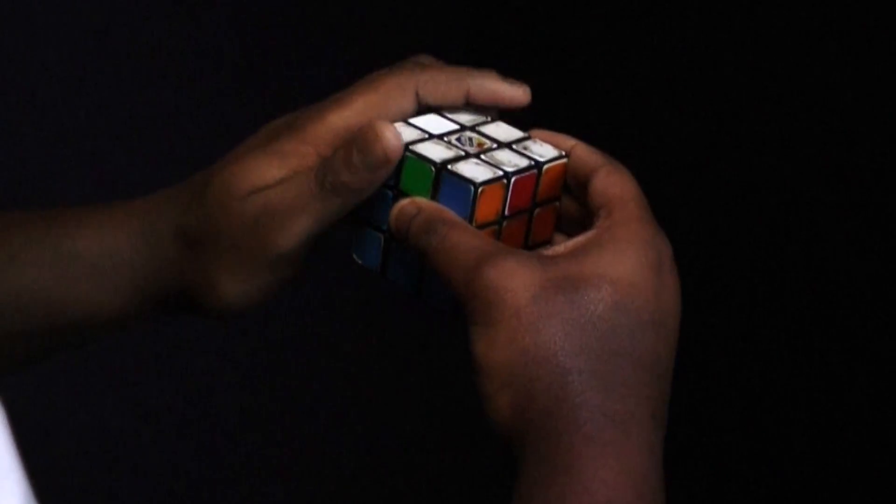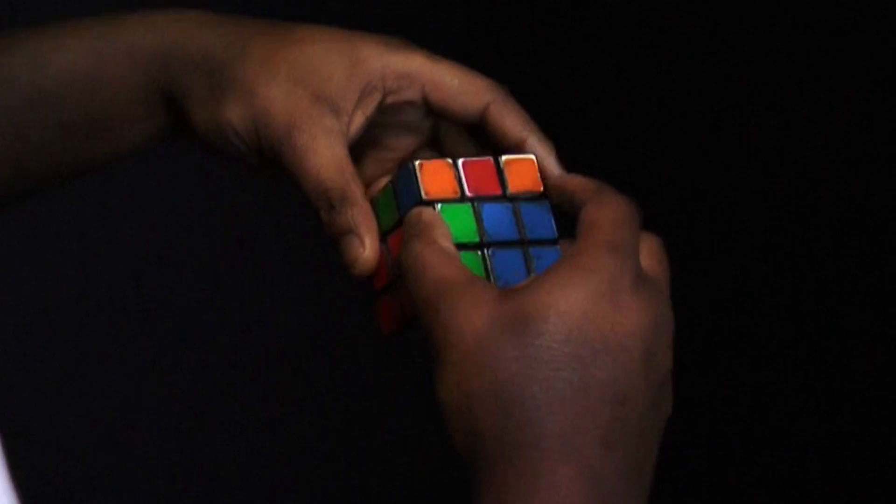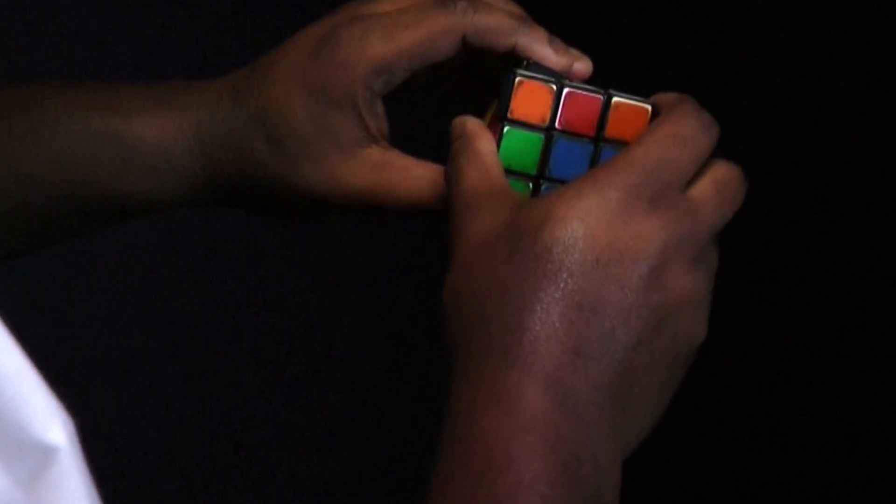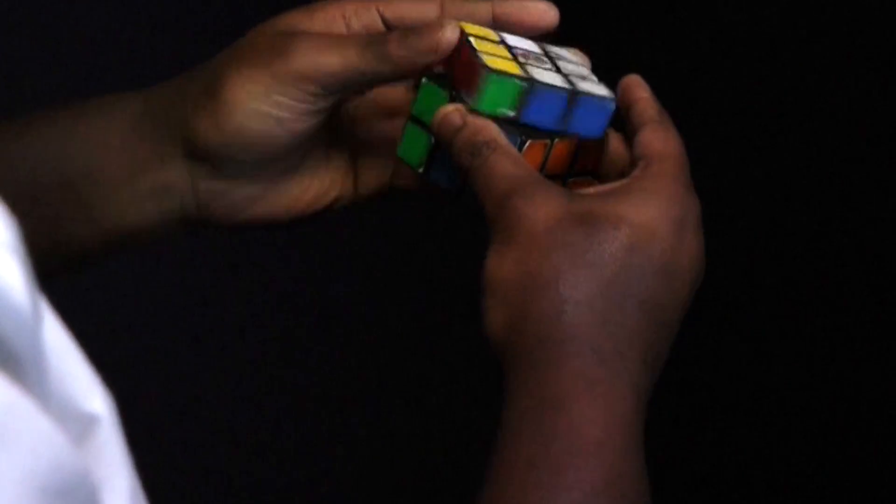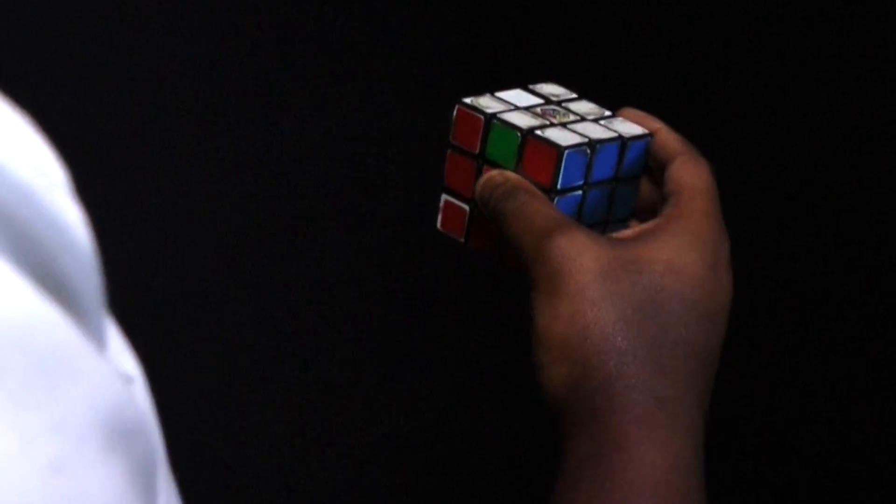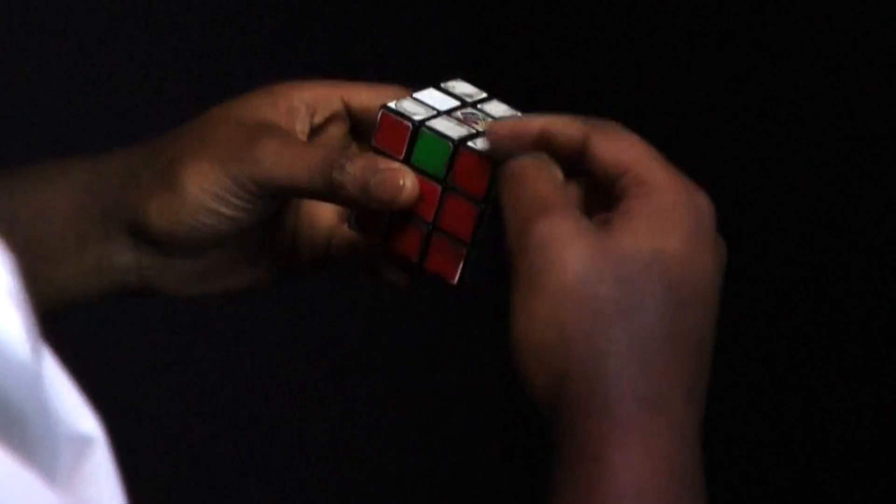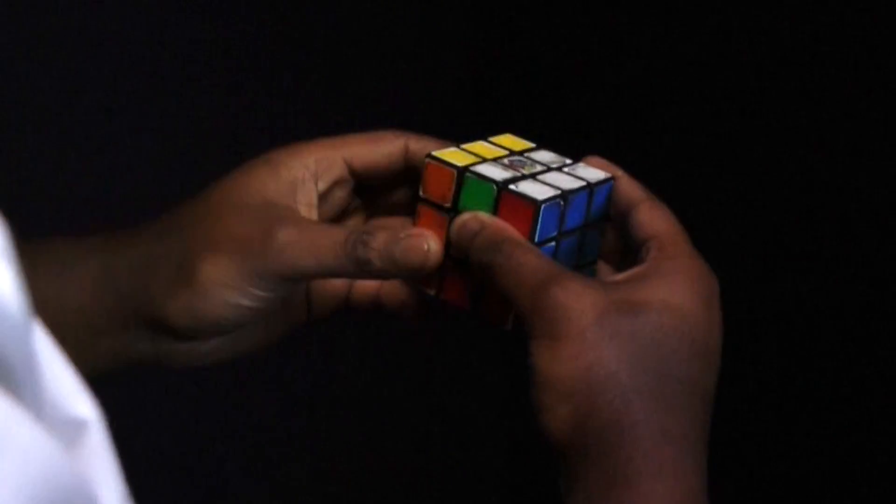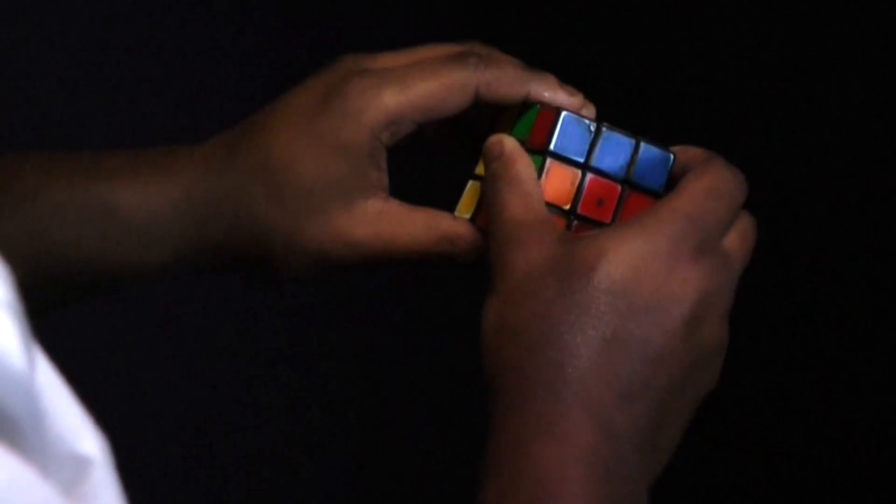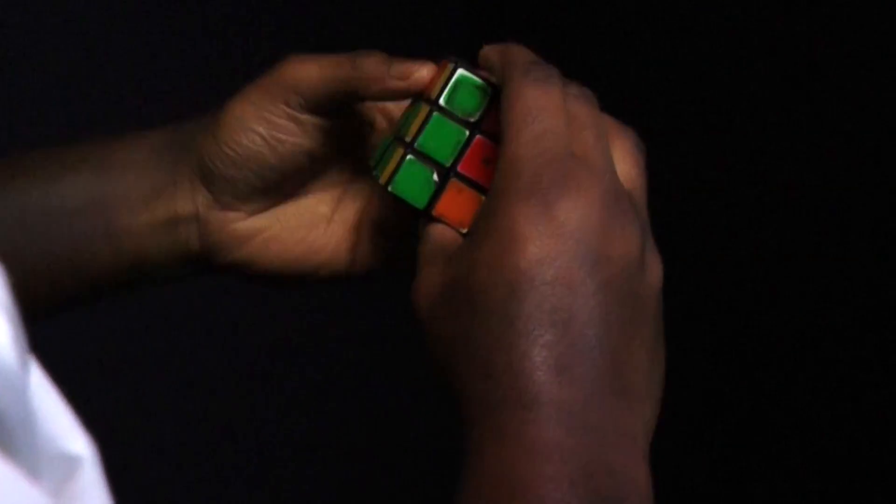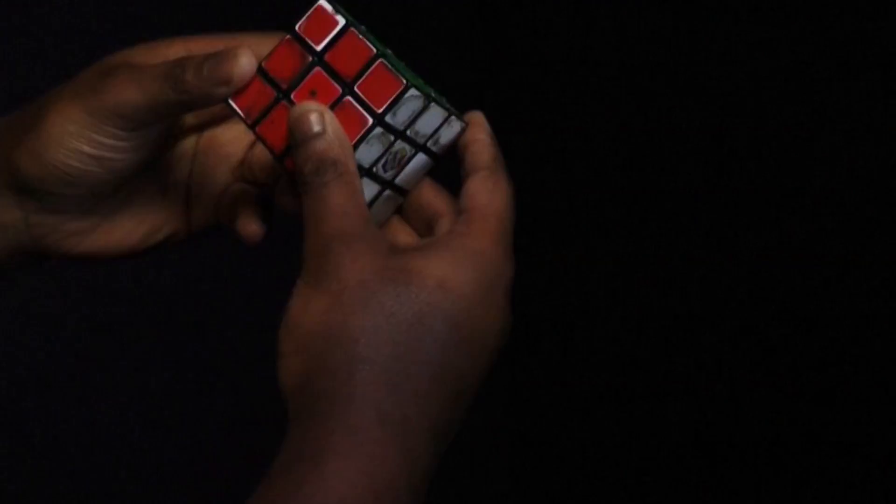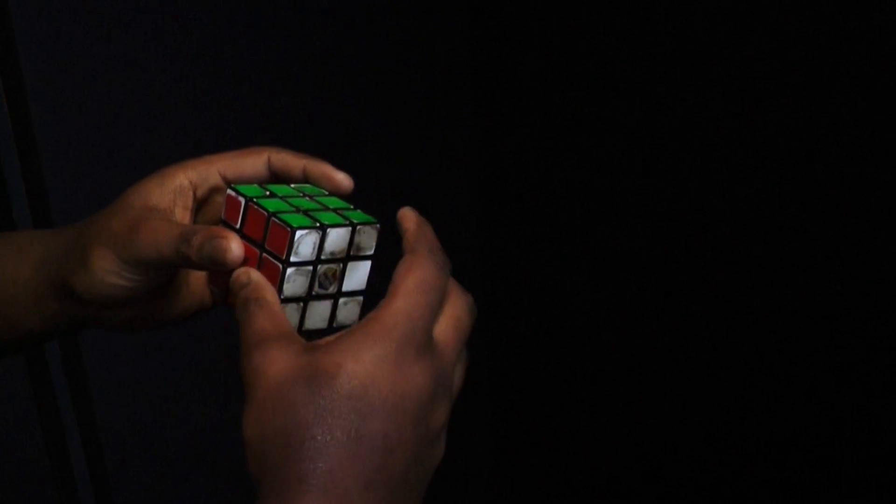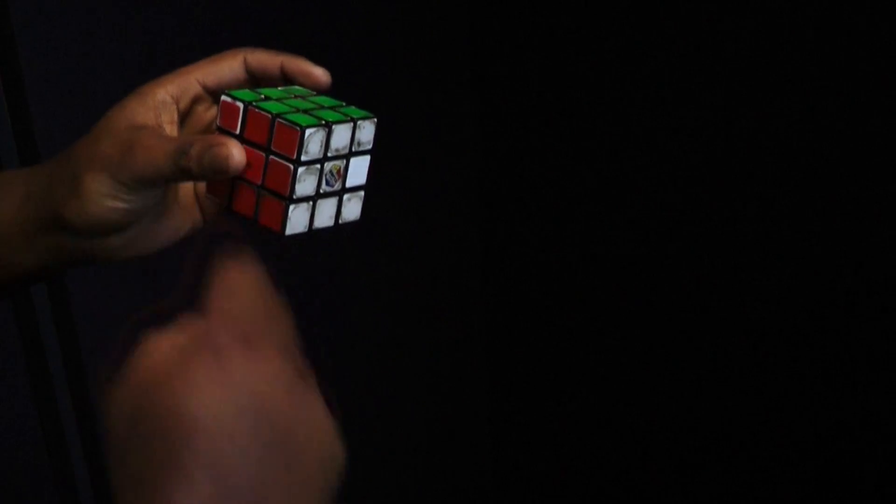You need to hold the cube like so. Left twice. Up. Back. Front prime. Left twice. Back prime. Front. Up. Left twice. Back. Front prime. Up. Back. Front prime.